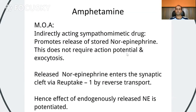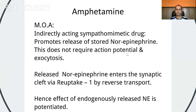Looking at the mechanism of action: Amphetamine is an indirectly acting sympathomimetic drug, so it promotes the release of stored norepinephrine. This does not require an action potential or exocytosis, which would normally be required for norepinephrine release. Amphetamine spontaneously causes the release of stored norepinephrine, which enters the synaptic cleft by reverse transport. Hence, the effect of endogenously released norepinephrine is potentiated in the CNS.